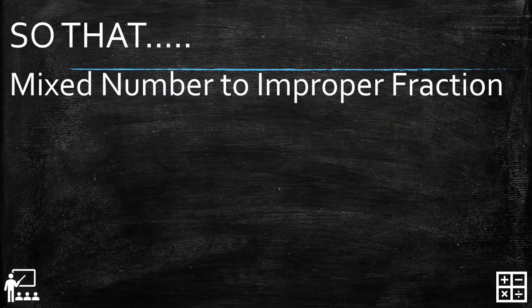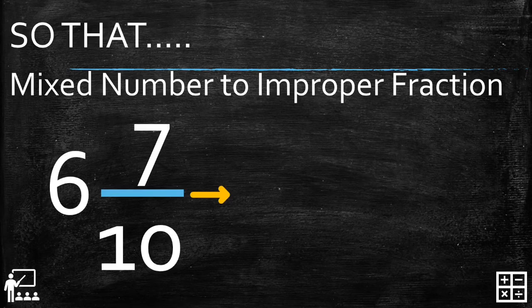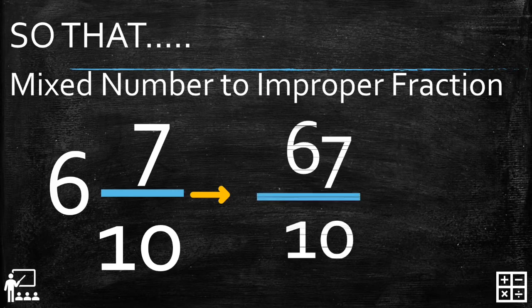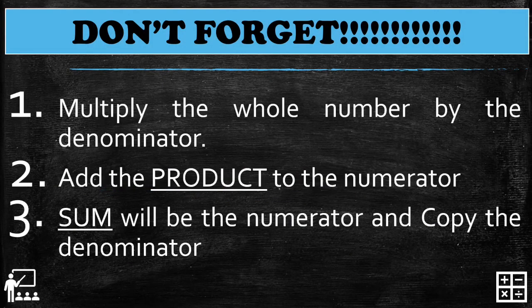So 6 and 7/10 is equivalent to 67/10. We have just changed the mixed number to an improper fraction. Remember, in changing a mixed number to an improper fraction, we have three steps: first, multiply the whole number by the denominator; second, add the product to the numerator; and third, the sum will be the numerator and just copy the denominator.